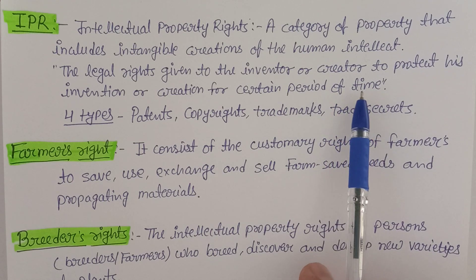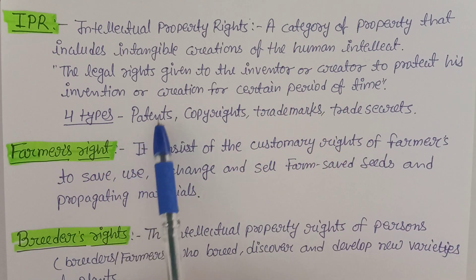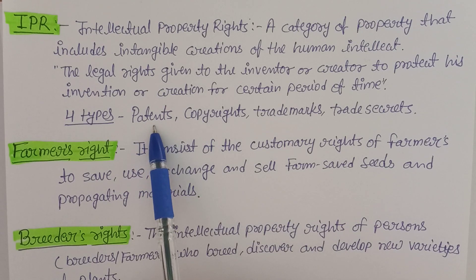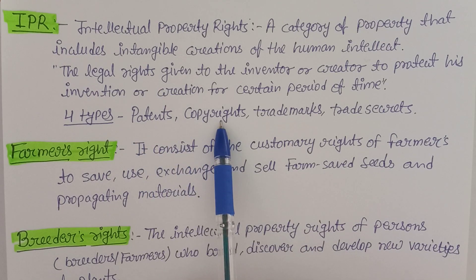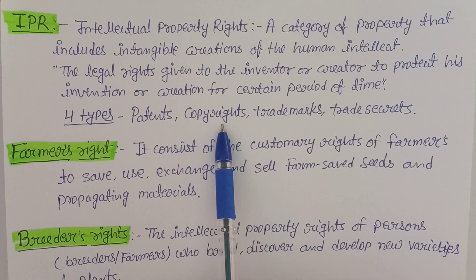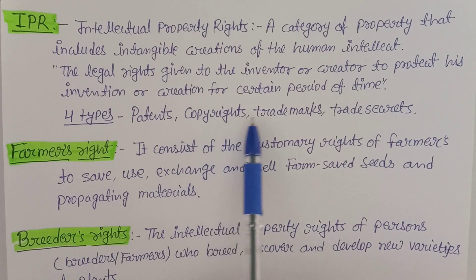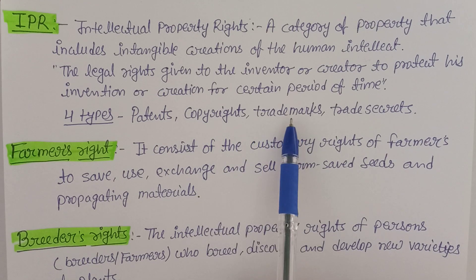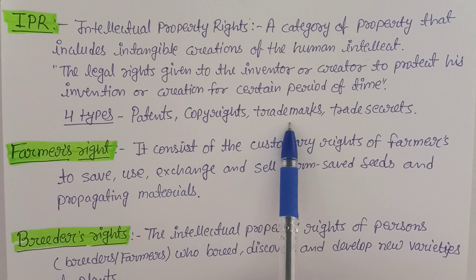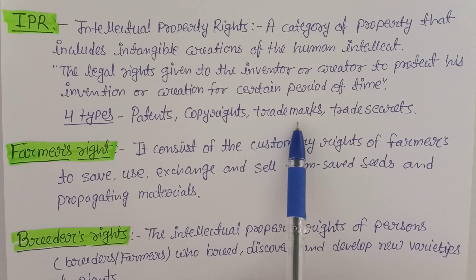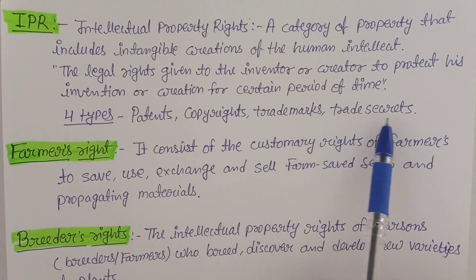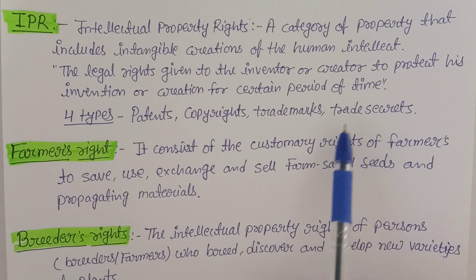There are four types of IPR. First is patent, which we have already discussed. Second is copyright — if you have published a book, journal, or article, you fill a copyright form while submitting. Third is trademark — you can have a hologram or mark for your company or organization that nobody can copy. Fourth is trade secrets — the secrets of a particular trade that can be protected.